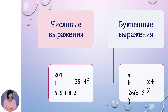К буквенным выражениям можем привести следующее: a умножить на b, или x плюс y, или 26 умноженное на выражение в скобках (x плюс 3). Видим, что здесь для буквенных выражений используются буквы, числа и действия с этими элементами.